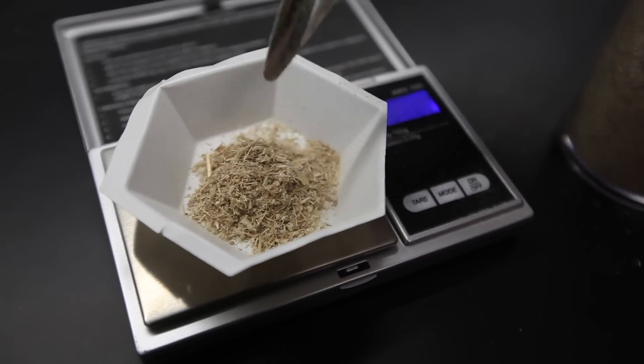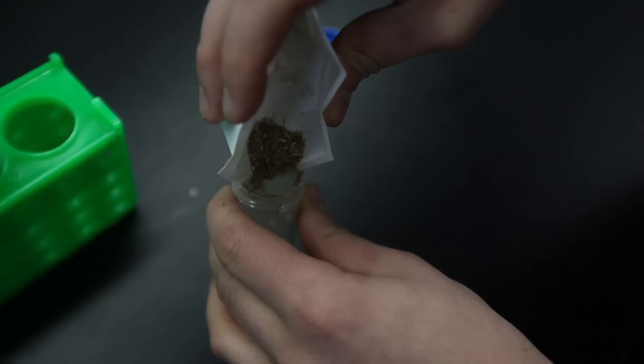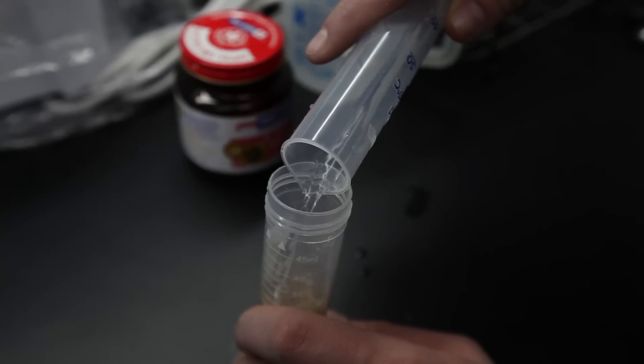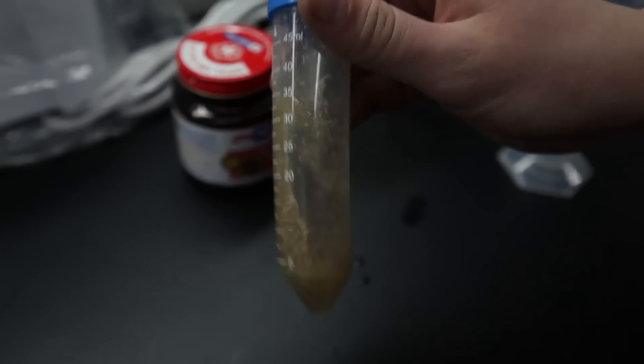The next thing to do is to weigh out roughly a gram of biomass and add it to the test tube. Also measure 25 milliliters of water and add that as well. Cap the tube and shake it thoroughly.